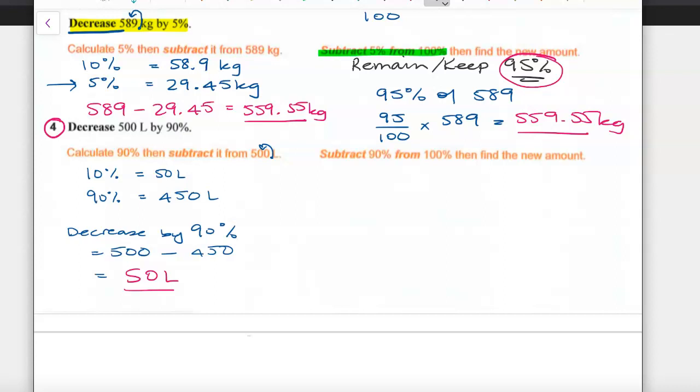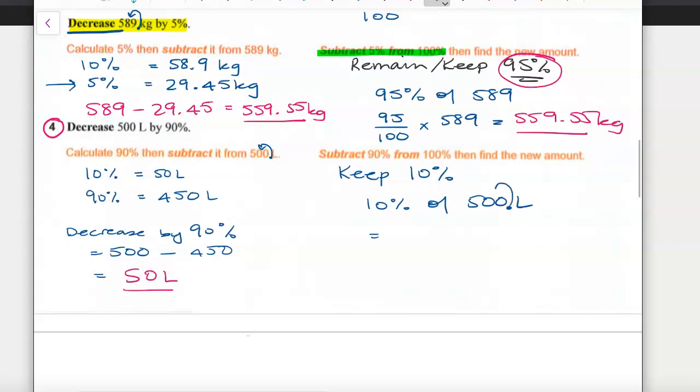In method 2, I want to keep just 10%. I want to subtract 90%. So I only want to find out what 10% of 500 litres is. Well, that's a real easy one. We know where the decimal is. That will simply leave us with 50 litres. But thinking about what we actually want to keep, rather than calculating what we take away.